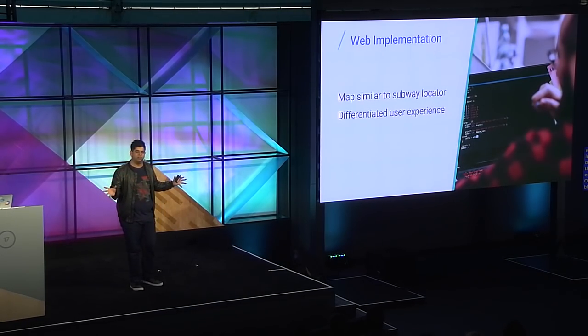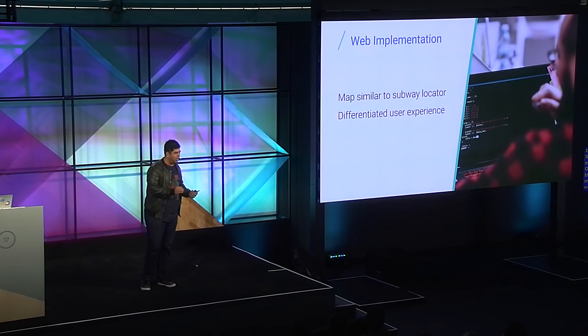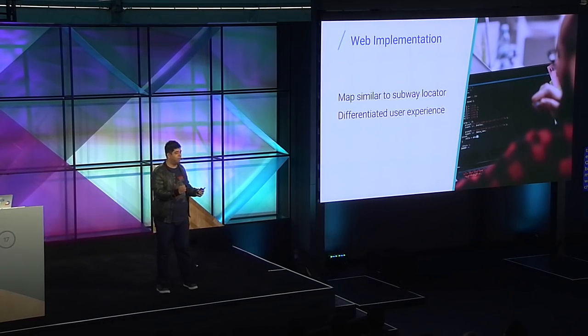The web implementation doesn't change much architecturally — different styles and different markers for leasing versus purchasing, but architecturally it's the same. When the viewport changes or the user clicks a marker, we bring up an info window with the right information, along with other HTML elements around it.